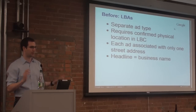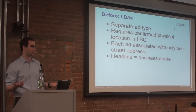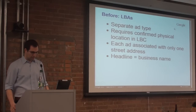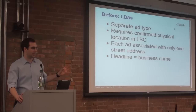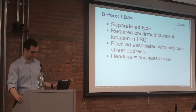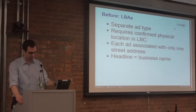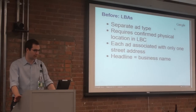There were some exceptions, though. Some partners with trusted content were allowed to create local business ads without going through LBC, but for the most part, the vast majority — anyone who wanted to create an LBA had to also have a confirmed LBC location. Furthermore, each ad was only associated with one street address. So say you wanted to use the same ad copy for 12 different stores that you owned, you'd have to create 12 identical ads, and if you had a typo in one, you'd have to delete all 12 and create 12 new ones. Another limitation of LBAs is that we require that the headline of the ad — the first line — be identical to the business name, and that was to keep a certain level of consistency with Google Maps organic listings.